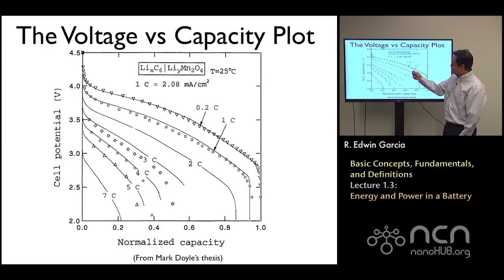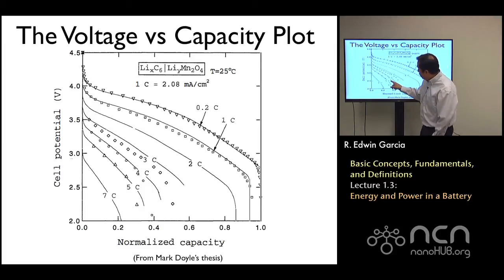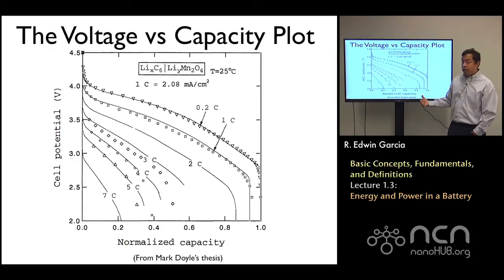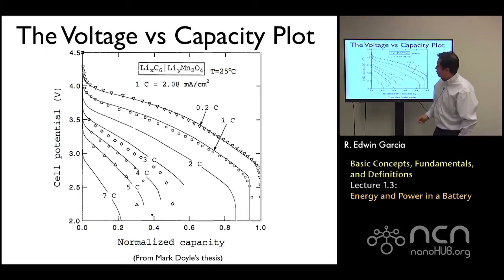This axis corresponds to how much charge the material has utilized. You can think of this as the current density that the material is being extracted for that specific discharge times the time, giving you effectively the amount of charge that you're utilizing. In this case, this plot has been normalized to how much charge has been used.